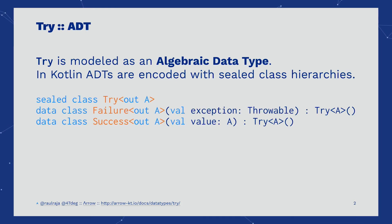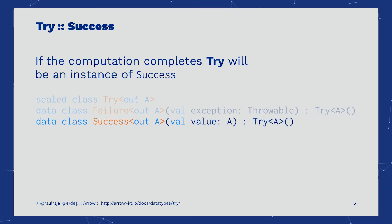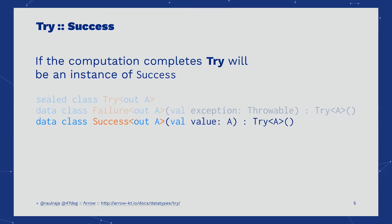TRY is modeled in the same way as Option and Either as an algebraic data type. In the case of TRY, we have two cases: failure and success. If the computation fails with an exception, TRY will capture the exception and place it in a failure. If the computation completes, TRY will place the value resulting from the computation in a success.